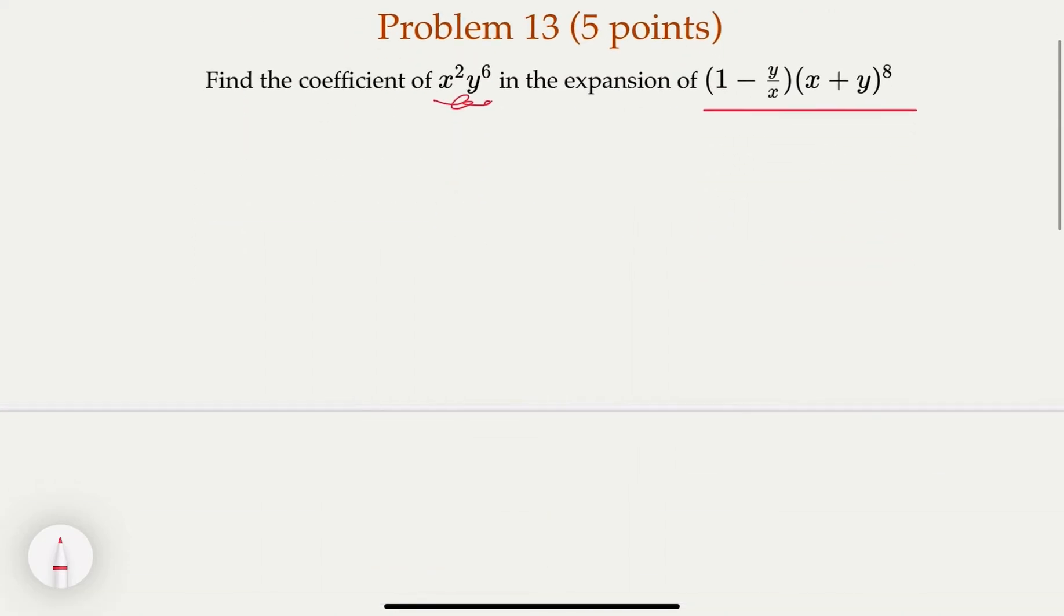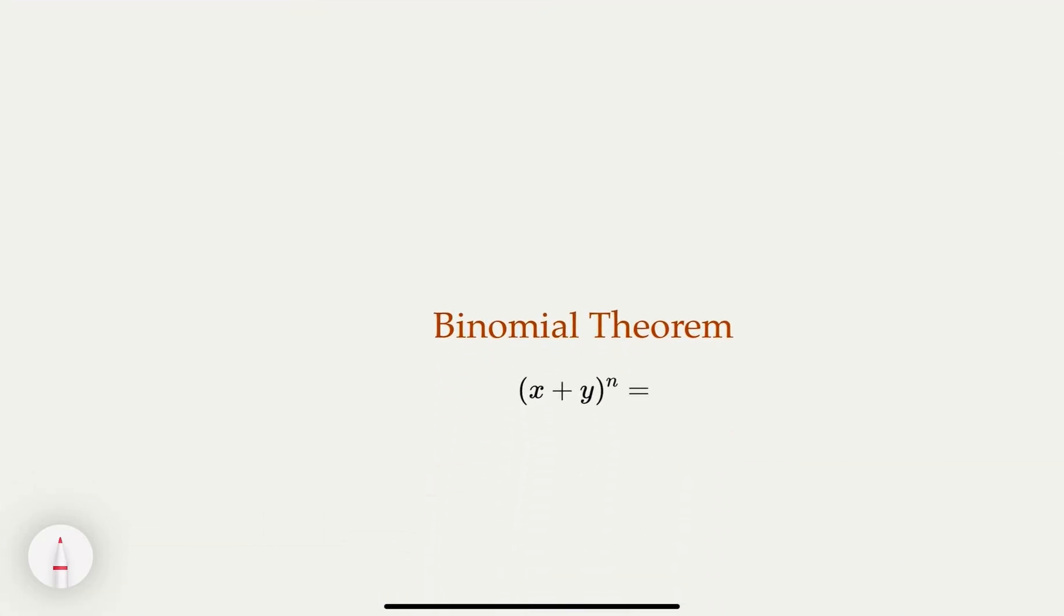Let's recall that binomial theorem saying that x plus y raised to the nth power is going to be equal to summation from i from 0 to n, where n choose i, and then x to the power n minus i, and y to the i's power. So here, n choose i, this really depends on the value here.